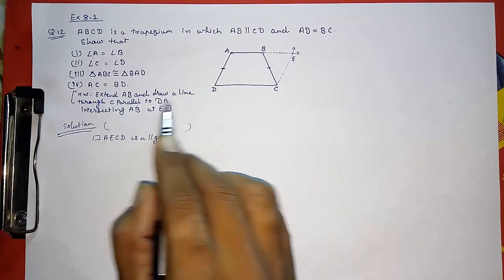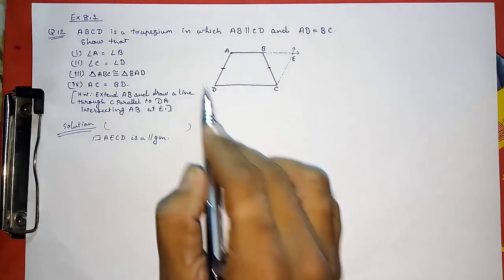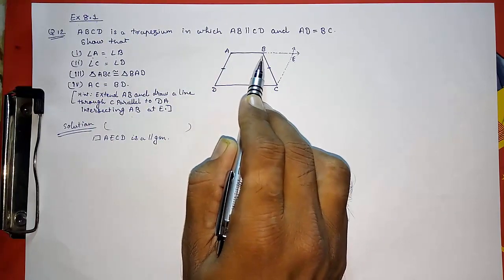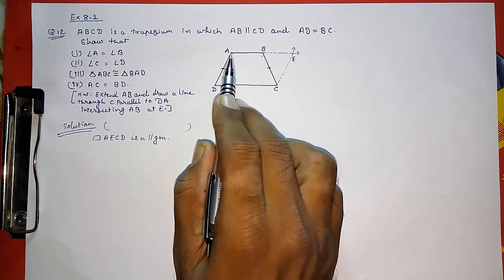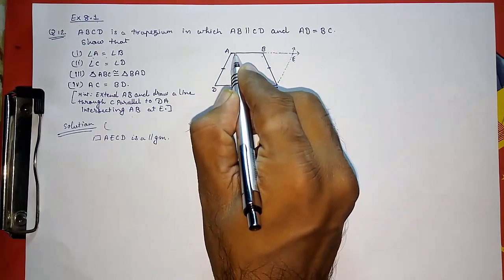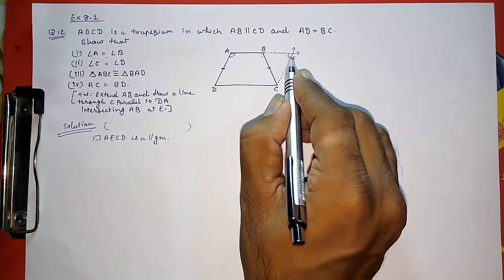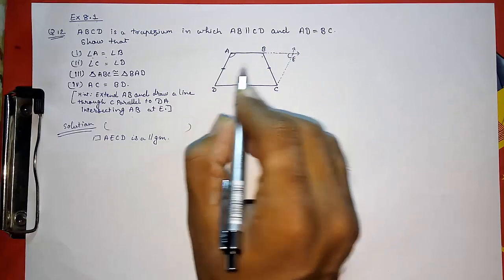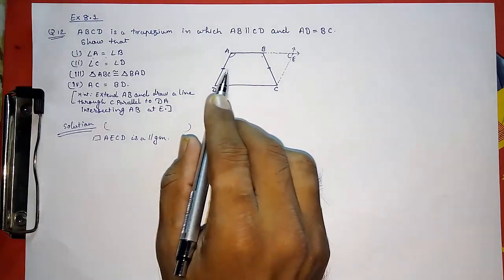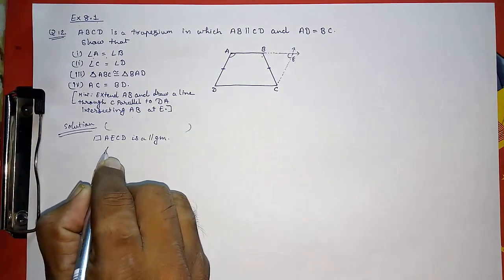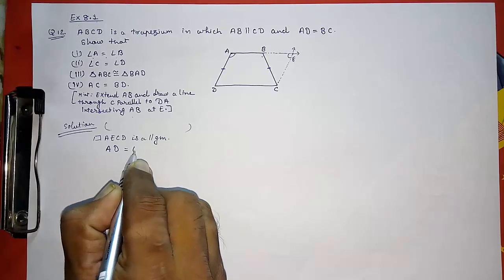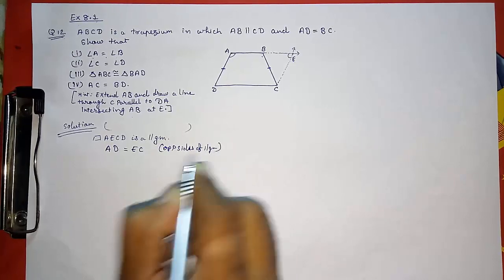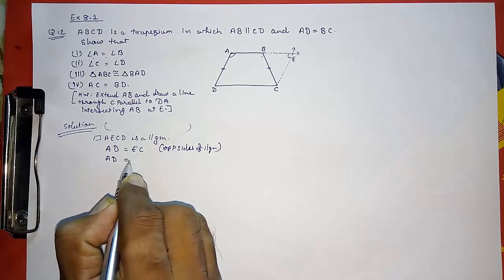Now first we have to prove that angle A is equal to angle B. Since AECD is a parallelogram, the sum of adjacent angles is 180 degrees. Also, opposite sides of a parallelogram are equal, so AD is equal to EC. And since AD is equal to BC (given), we can write that BC is equal to CE.